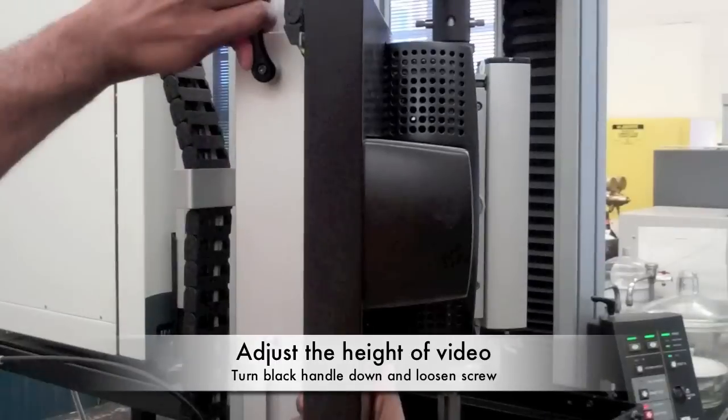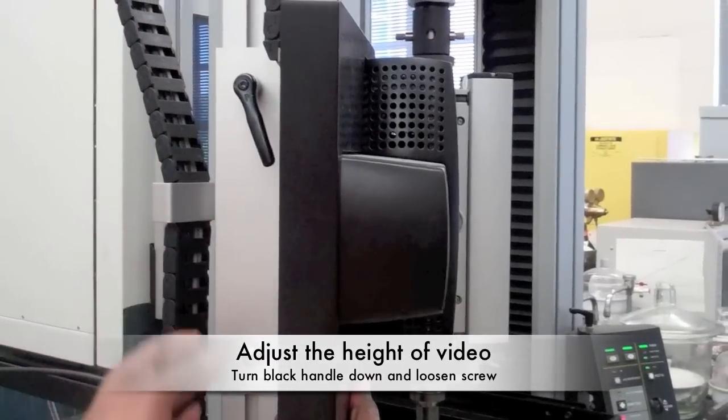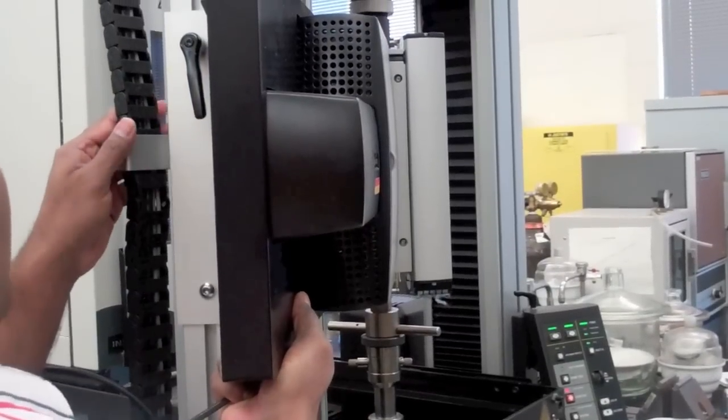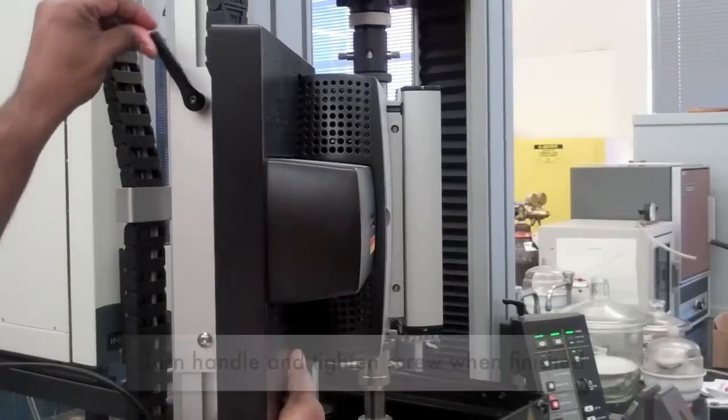If needed, adjust the height position of the video extensometer by turning the black handle and loosening the screw. After changing the position, tighten the screw and turn the black handle to the upright position.